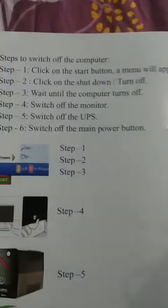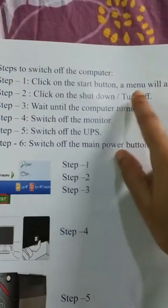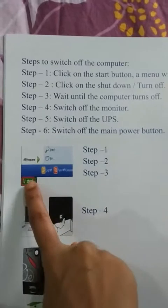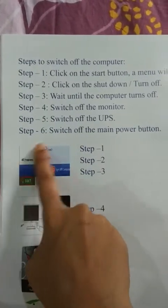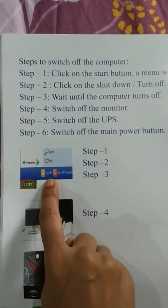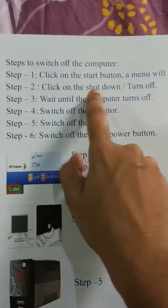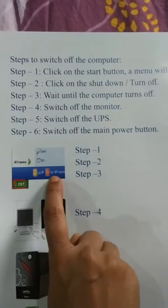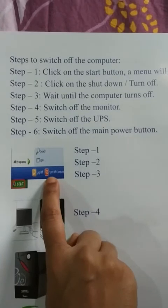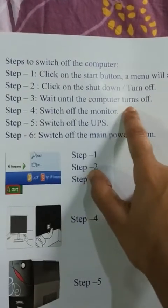Now we will learn how to switch off the computer. Step 1: Click on the start button — a menu will appear on the monitor. Step 2: Click on the shutdown or turn off. See, there are two options: turn off or log off. Click on the turn off button. Step 3: Wait until the computer turns off.